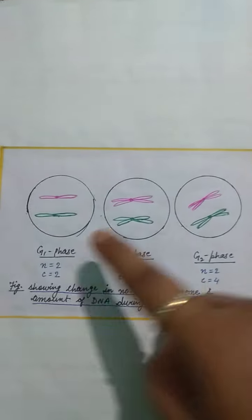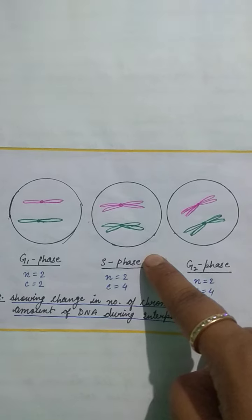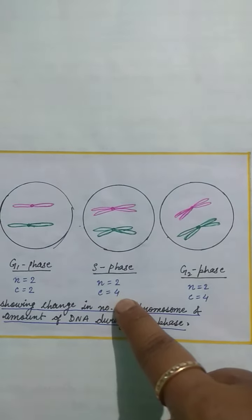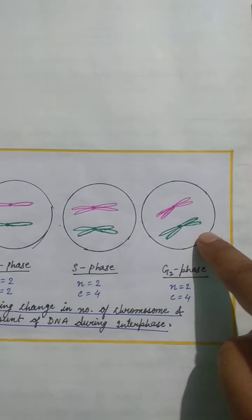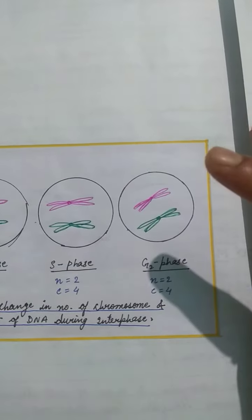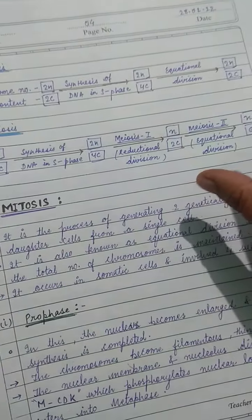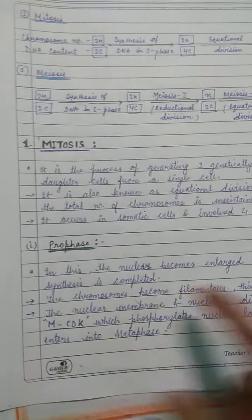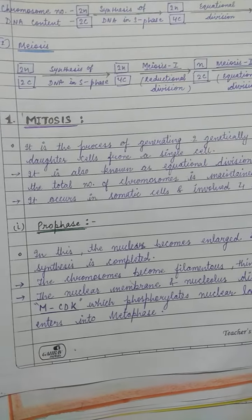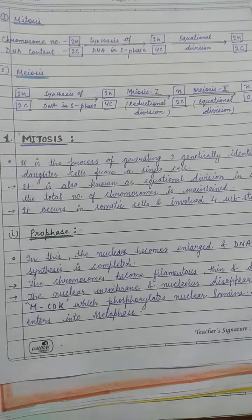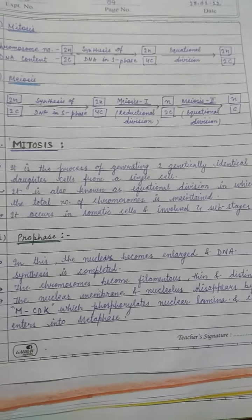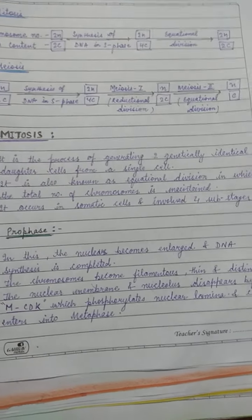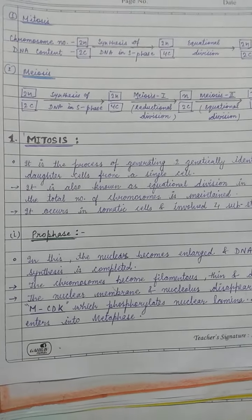Looking at the detailed diagram: starting with 2N chromosomes and 2C DNA content, in S phase DNA doubles with sister chromatid formation giving 4C DNA. After G2 phase it remains the same. After M phase, sister chromatids separate. In meiosis-1, the reductional division, homologous chromosomes separate. In meiosis-2, chromatids separate. Mitosis occurs in somatic cells and involves four sub-stages.